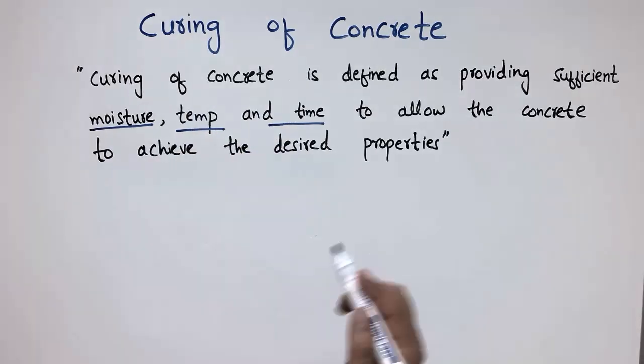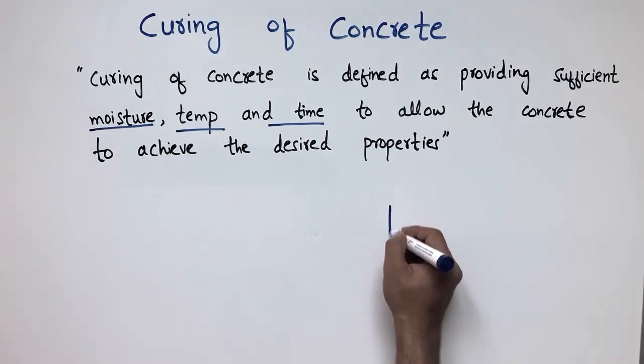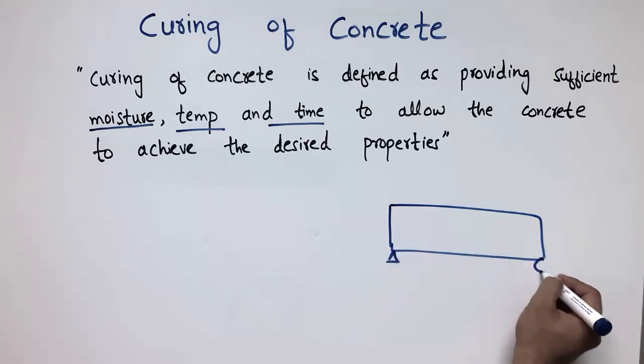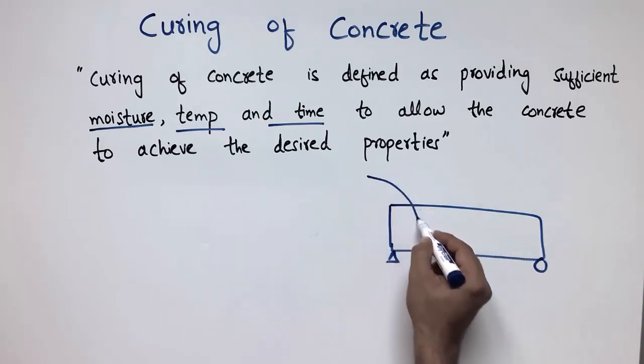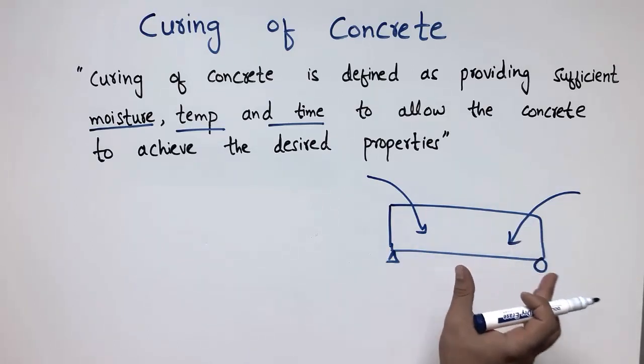Now I will try to explain this concept with the help of an example. Let's consider that this is my simply supported beam and I put the concrete into this beam. So after removing the formwork from this beam and pouring the concrete,